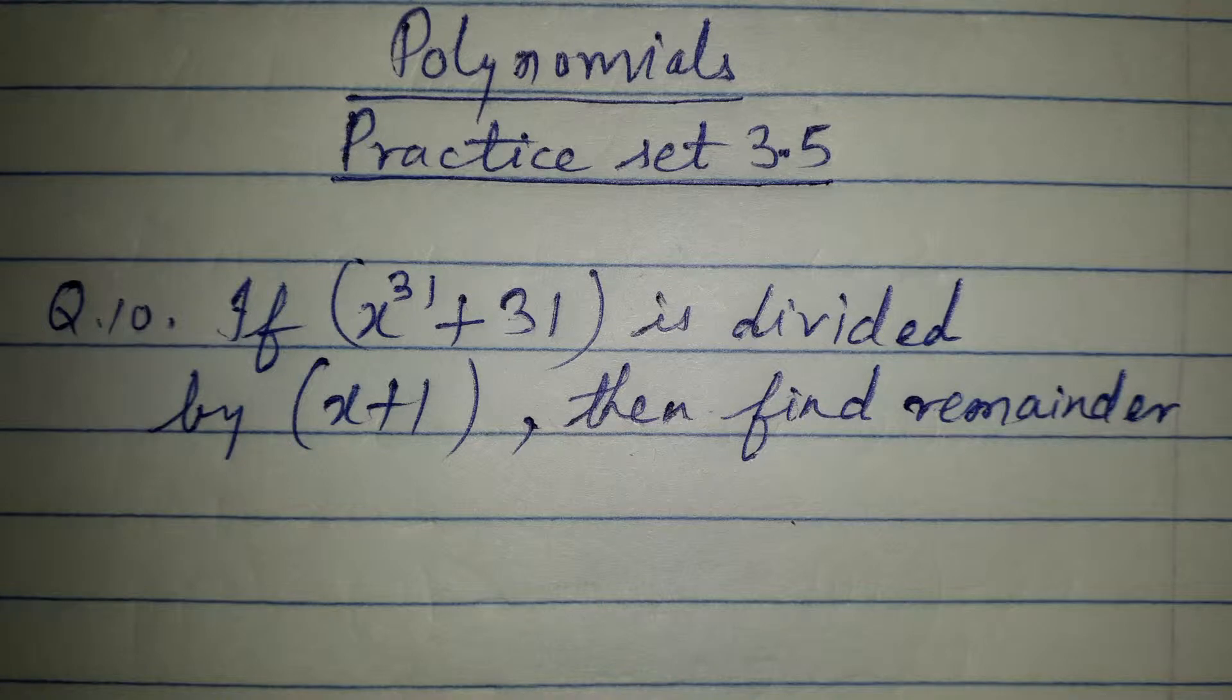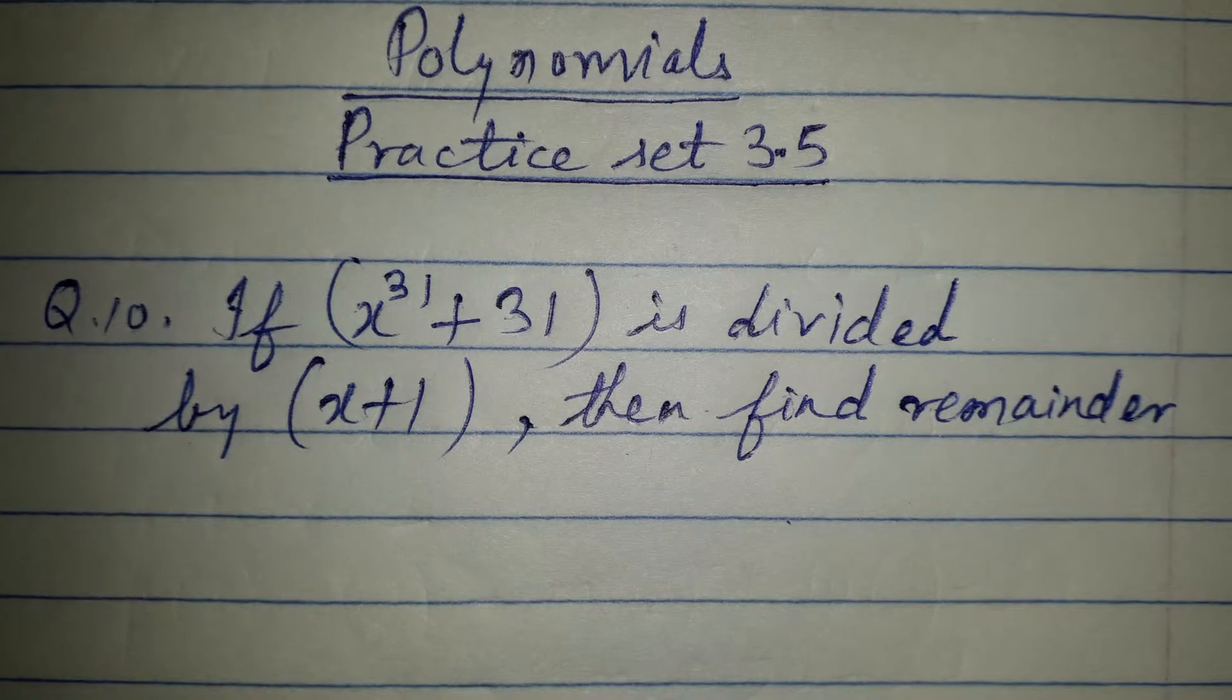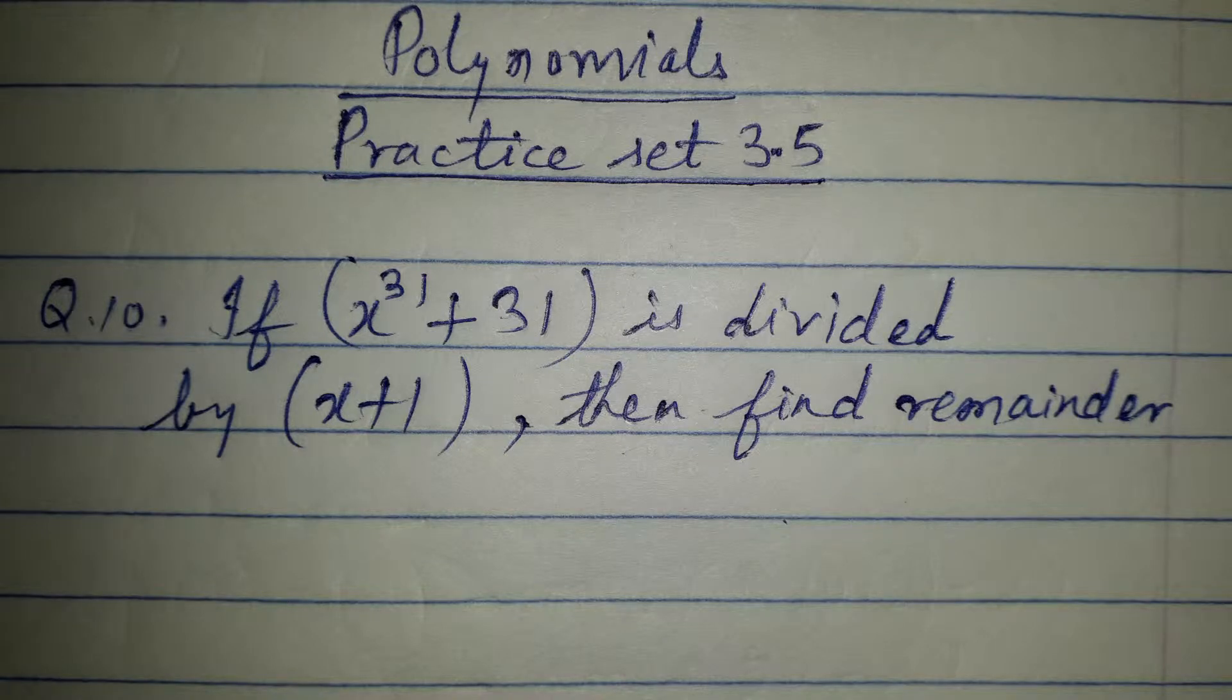Here it has been given that x raised to 31 plus 31 is divided by x plus 1, then we need to find the remainder. We can use the remainder theorem to find the remainder.